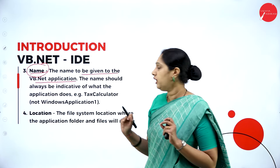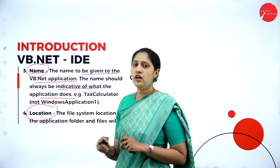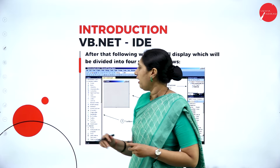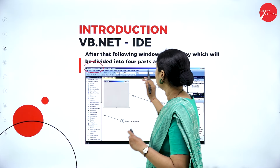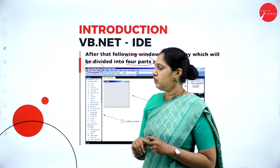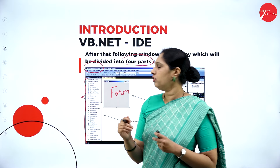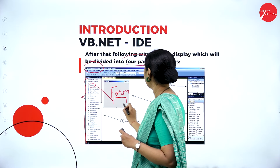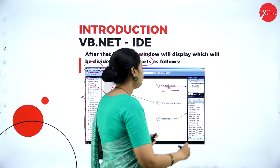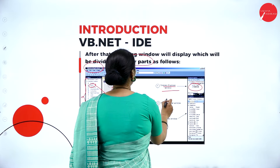We start with a new project. These are important steps: first is the project template — it gives a list of options for what type of application you want, such as Windows, Console, or Web Application. Then, give a name — whenever you see the name, you should understand what the program is. If it is a conditional statement program, name it 'Conditional Statement.' The name should always be indicative of what the application does. Also specify the location — which drive to store the file.